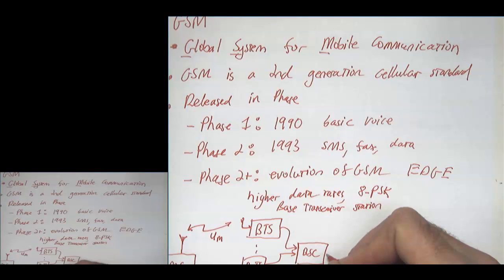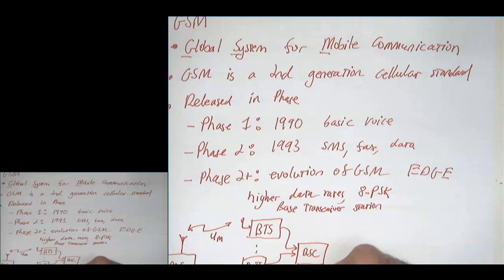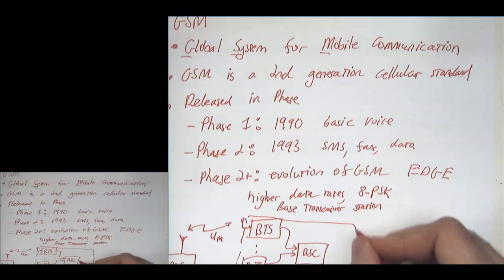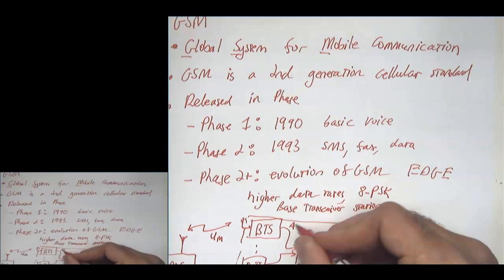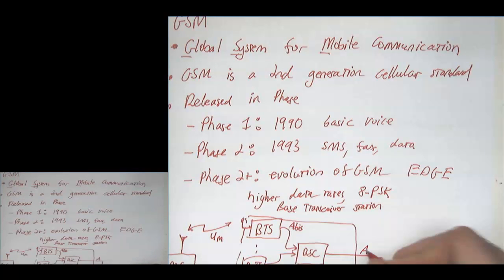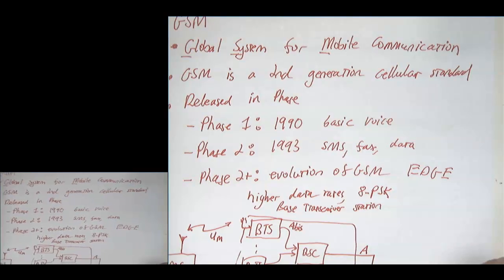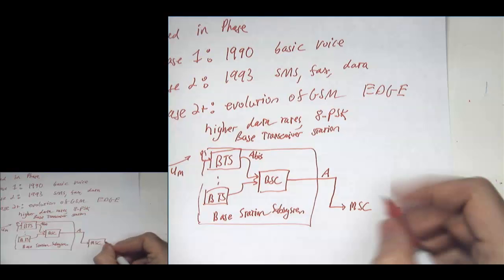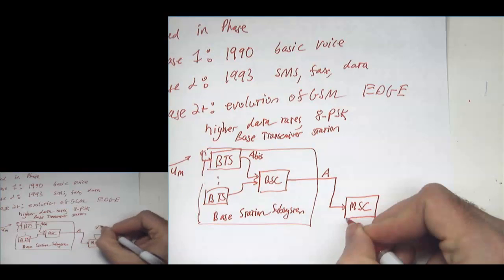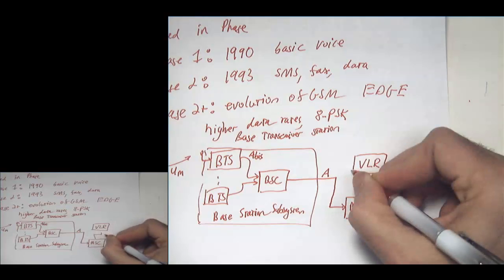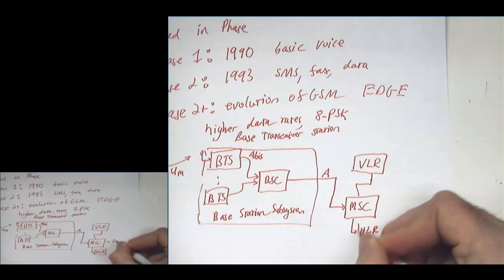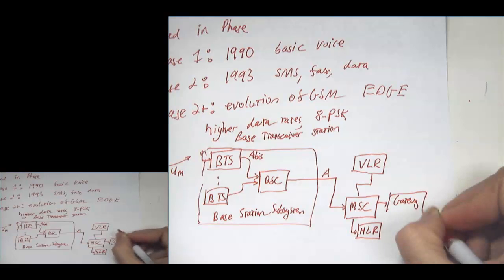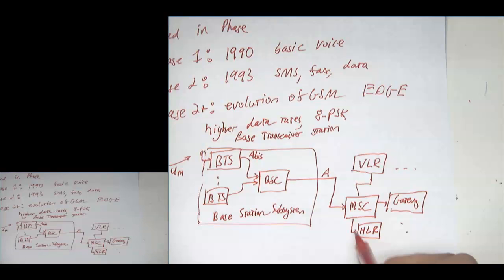The base station subsystem connects via the A-BIS interface and then the A interface to a Mobile Switching Center (MSC). There are various other components: a VLR (Visitor Location Registry), a Home Location Registry, and a Gateway. All of these interfaces have names, many of which I forget at this point.